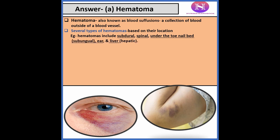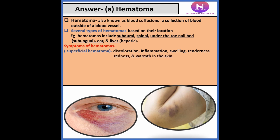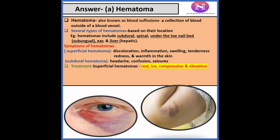Symptoms also depend upon the area affected. In superficial hematomas the symptoms are discoloration, inflammation, swelling, tenderness, redness, and warmth in the skin. In subdural hematoma the symptoms include headache, confusion, and seizures. The treatment for superficial hematomas is rest, ice, compression, and elevation — the mnemonic to remember is RICE.